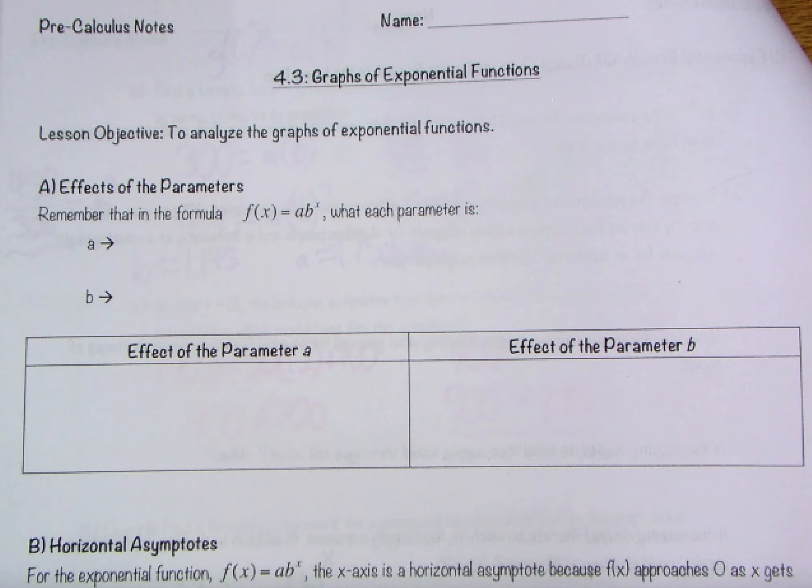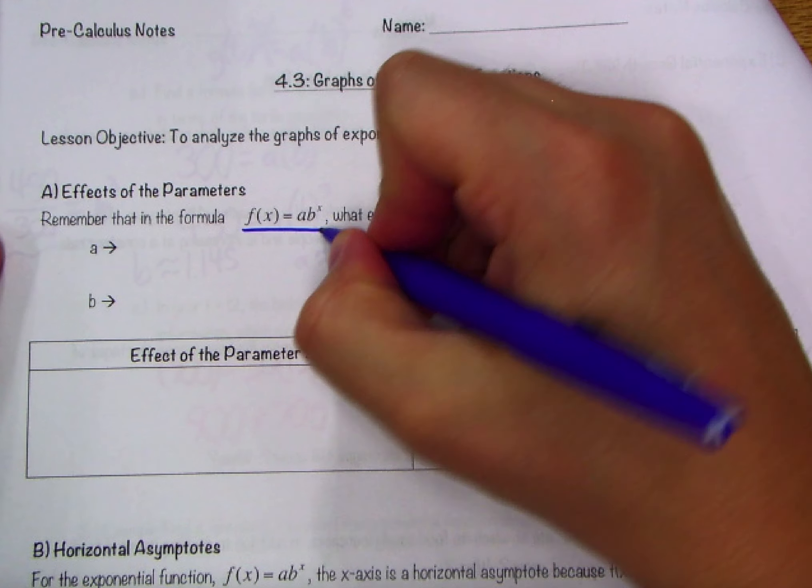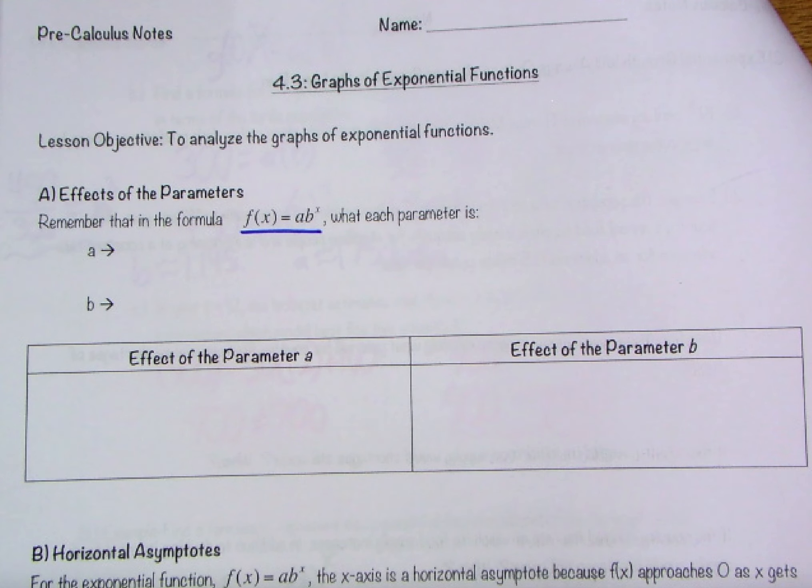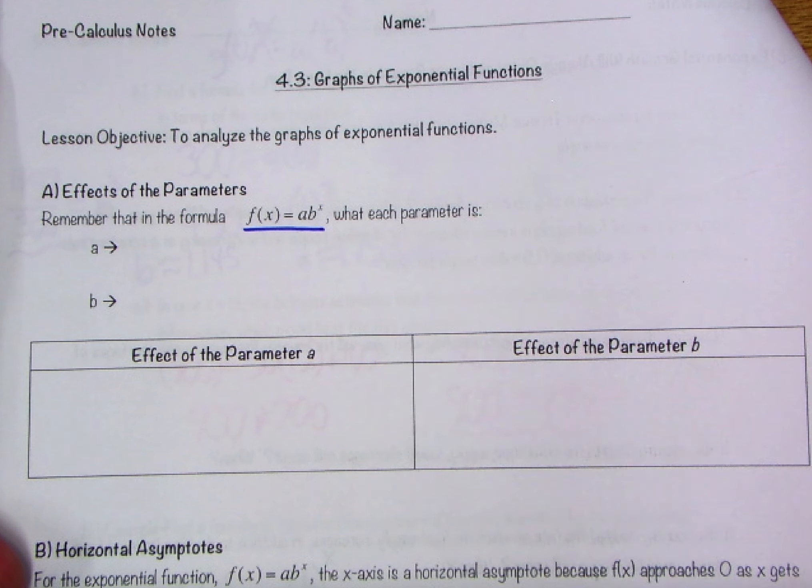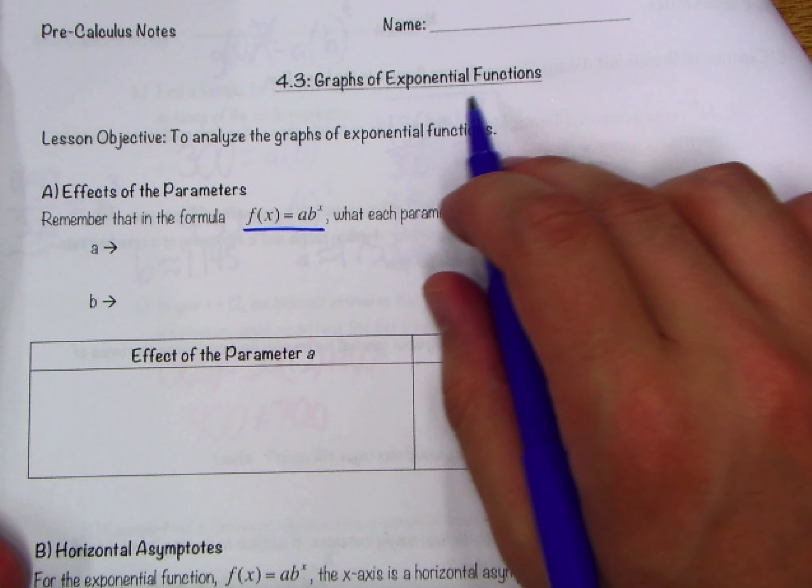Today we're going to be taking a look at graphs of exponential functions, and in general, what do they do with regard to their parameters, and what are some different ways that we can interpret things graphically? So without further ado, let's kind of recap our parent function.